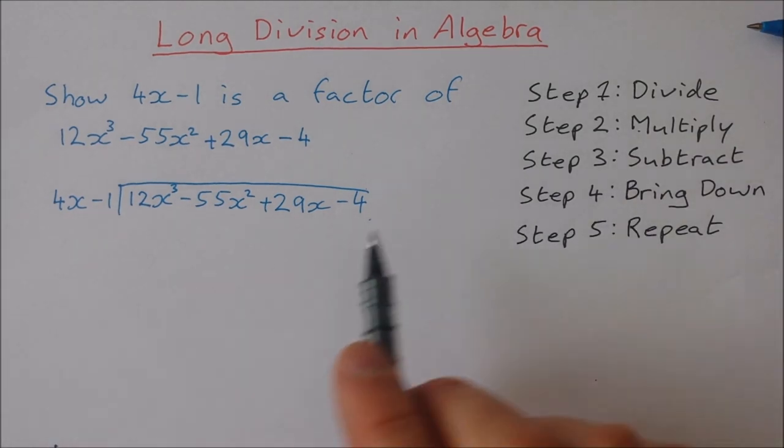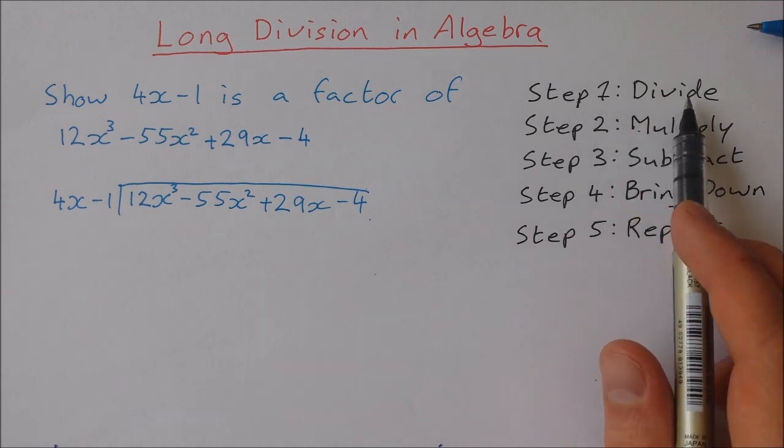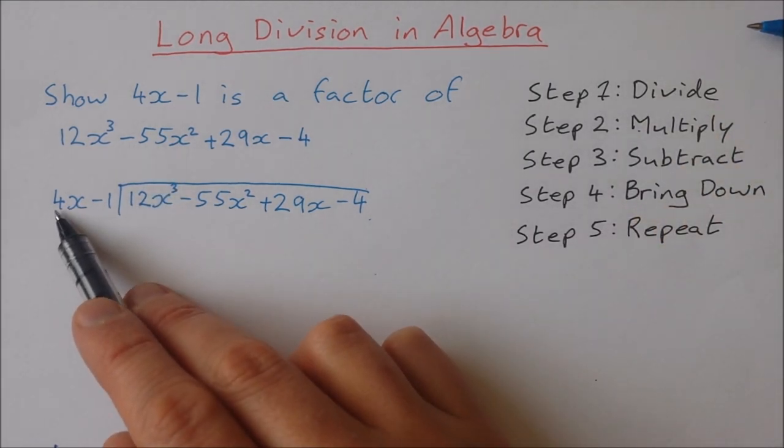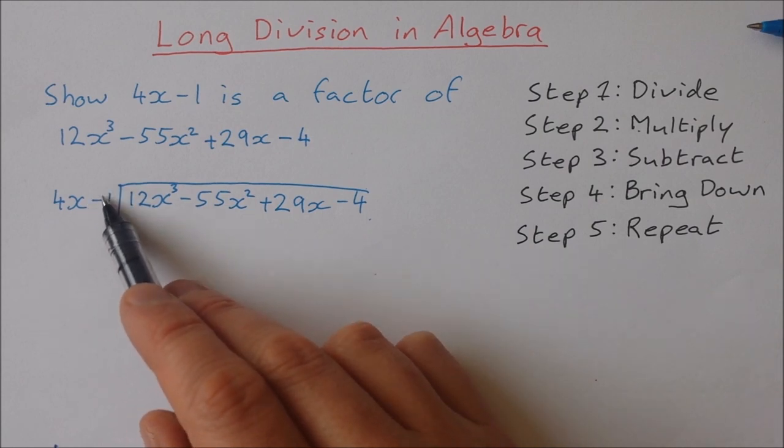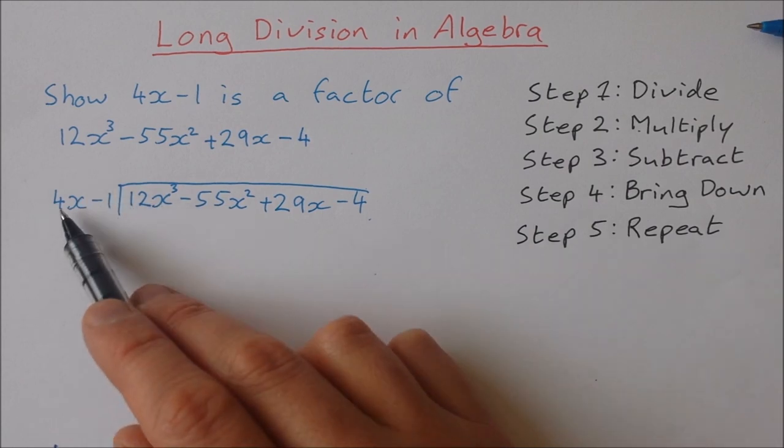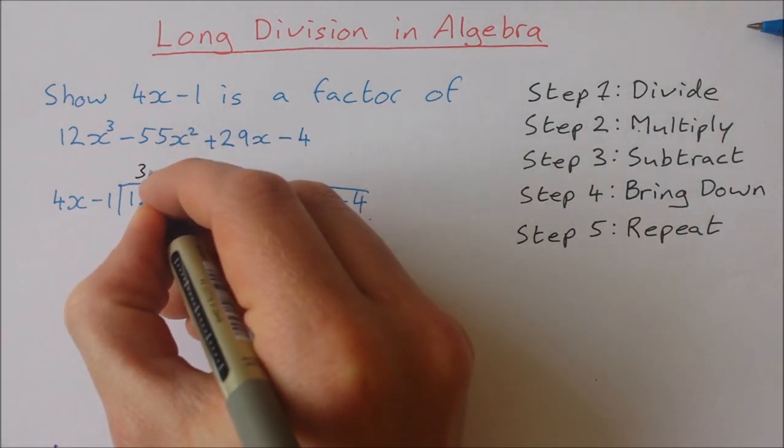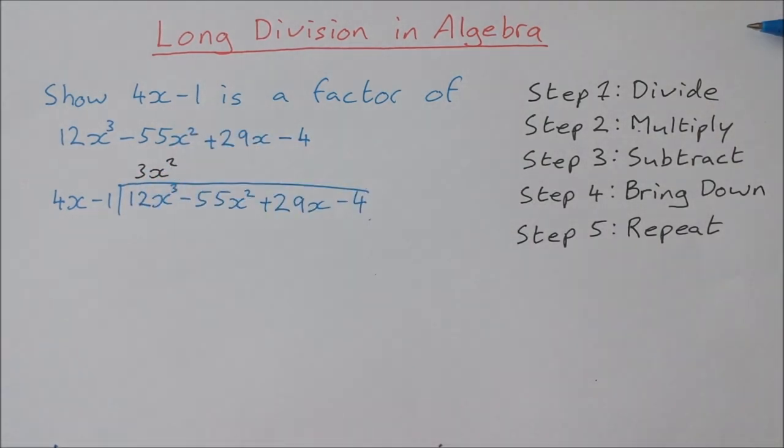Okay so let's give it a go. Step 1 divide. We're going to divide 12x cubed by 4x. Forget about this one for the moment. 12x cubed divided by 4x is 3x squared. We write the answer up there above. That's step 1.